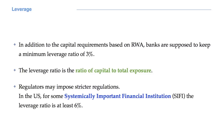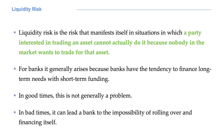Liquidity risk is the risk that manifests itself in situations in which a party that is interested in trading an asset cannot actually do it because nobody in the market wants to trade for that asset. For banks, this generally happens because banks have the tendency to finance their long-term needs with short-term funding. In good times, this is generally not a problem. If a bank is perceived as safe and healthy, it will have no problem in getting funding. But in bad times, liquidity risk can lead a bank to the impossibility of rolling over and financing itself. This is essentially what happened to Northern Rock in the UK and Lehman Brothers in the US.